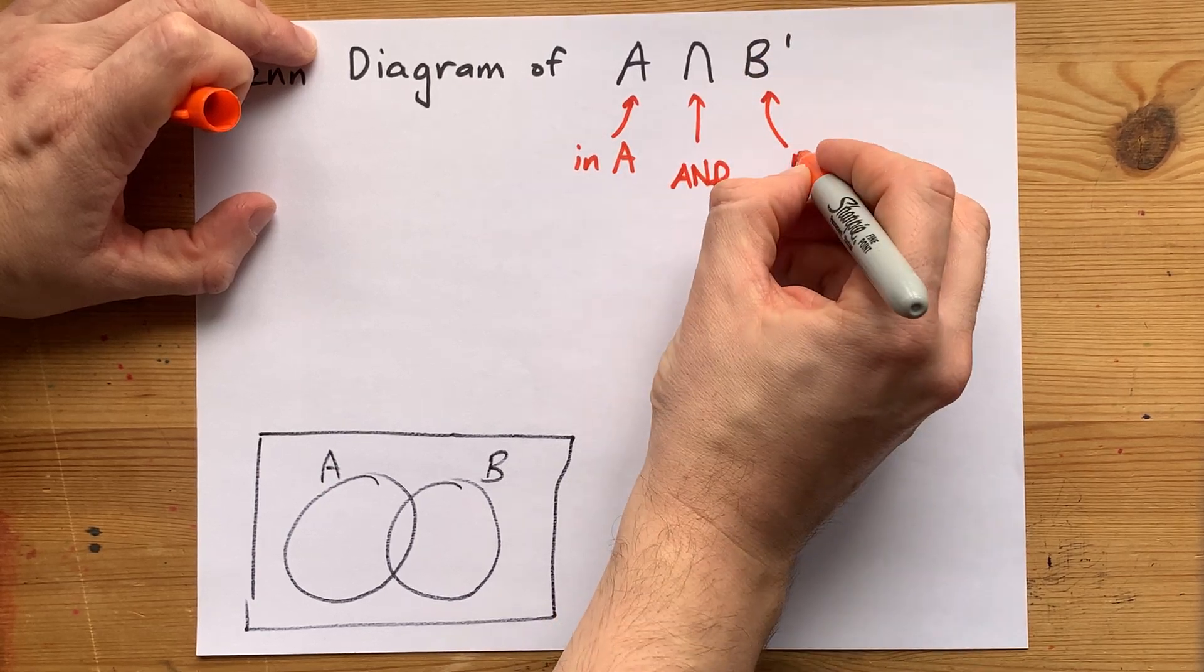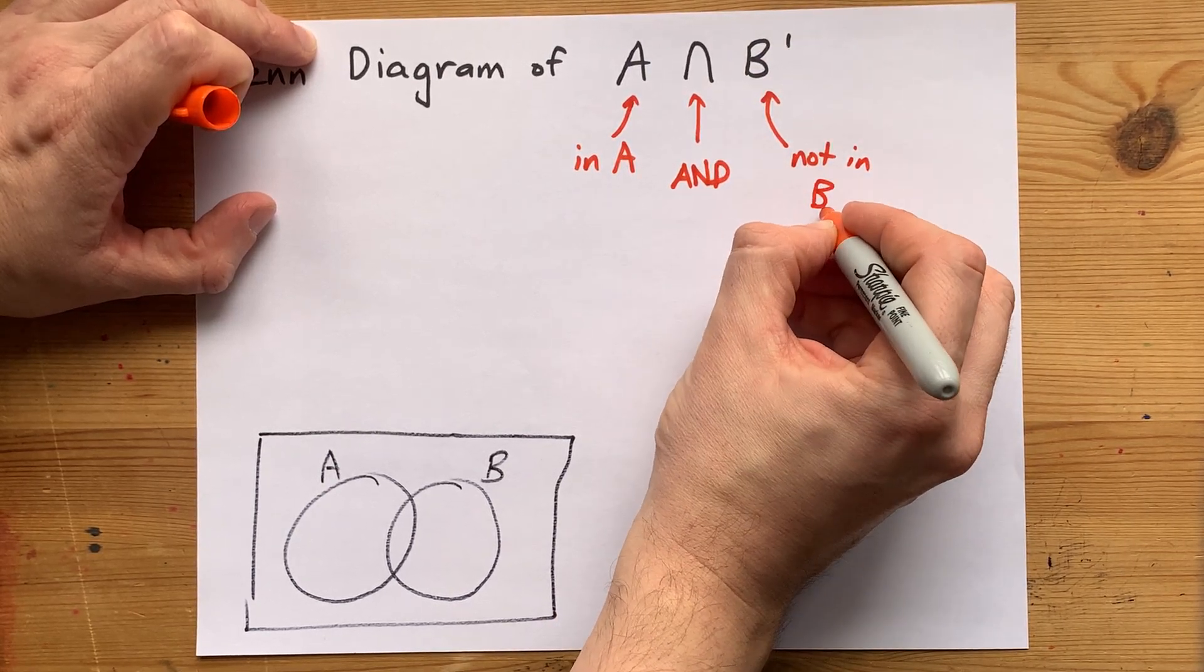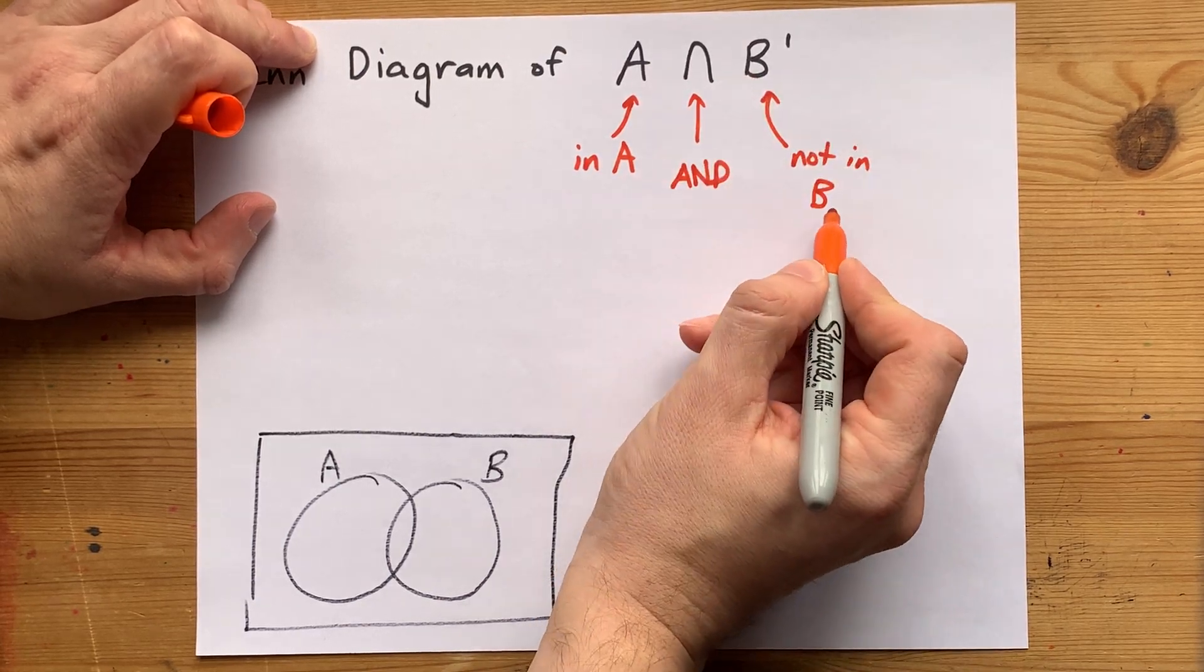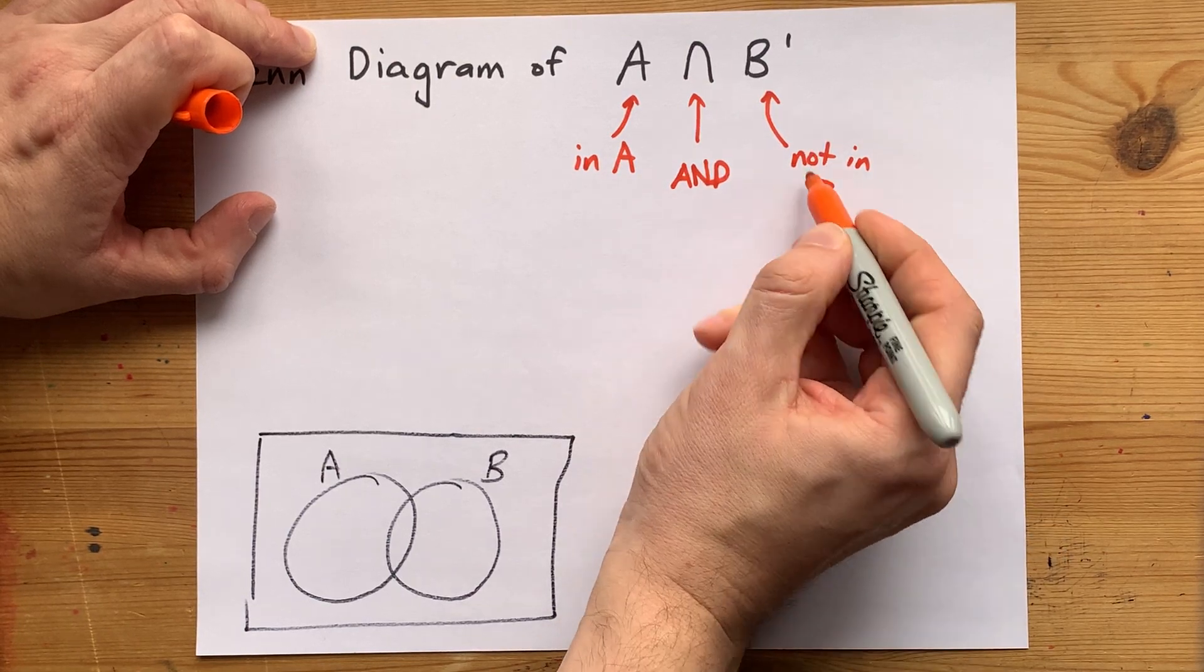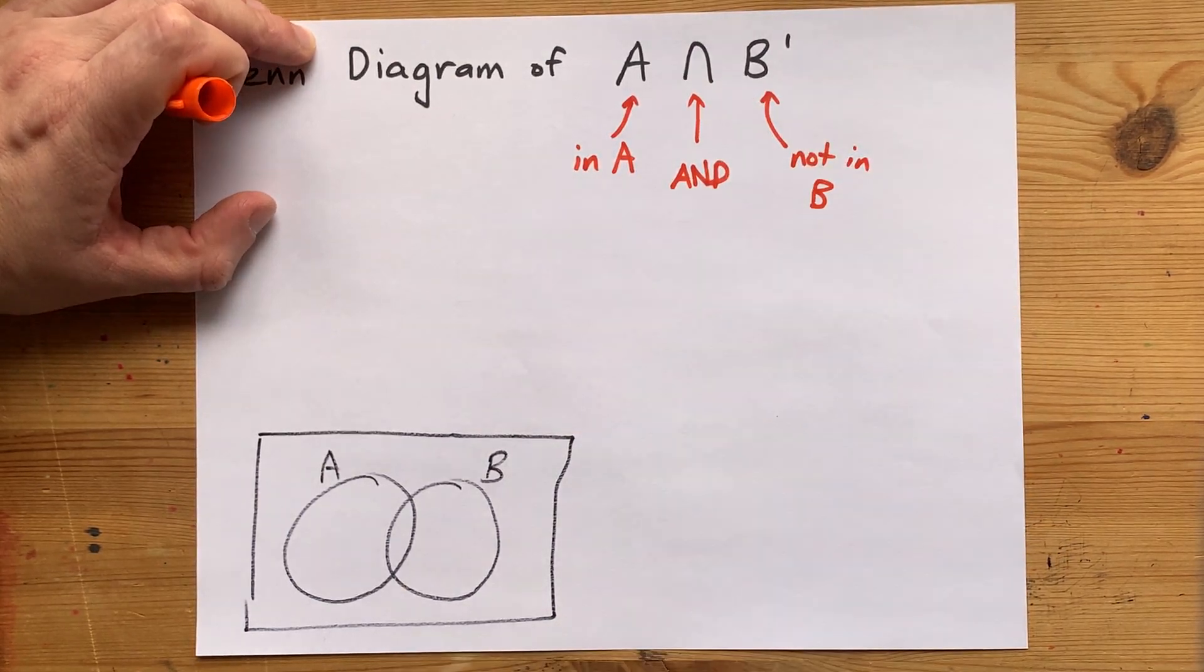B complement means not inside of B. I know B means B, but this apostrophe, which means complement, means the opposite as in not inside of B.